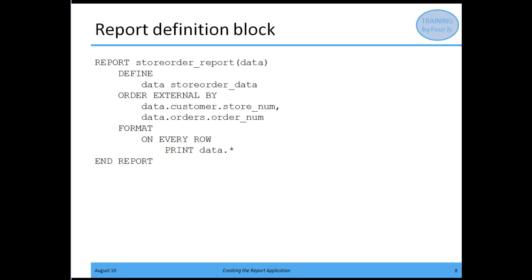So what does my report block do? If you're used to running reports in 4GL, it's much, much simpler — because my formatting and layouting is all being taken care of by my report design document. Here we define again using that type: my data is store order data. I have to have an ORDER EXTERNAL BY clause. I need to stream the data across in a specific order as I expect it when thinking about my report design. If you want things organized by store number or order number, it's important to define it here in the report block using ORDER EXTERNAL BY. And on every row, I print out the information I need to send across to my report.